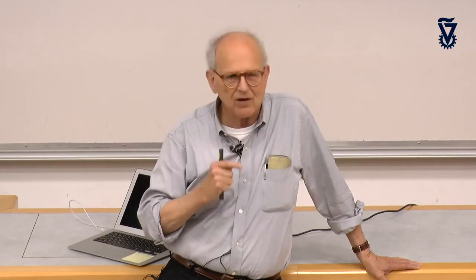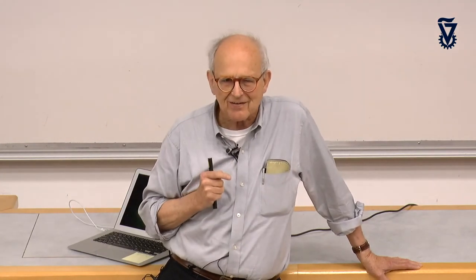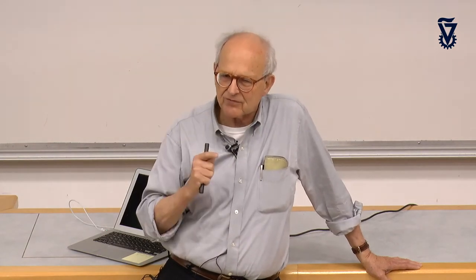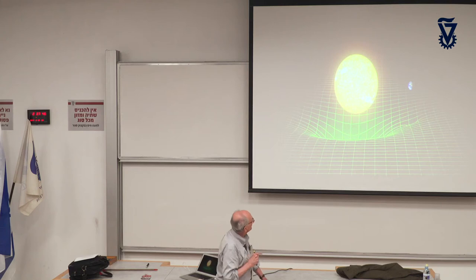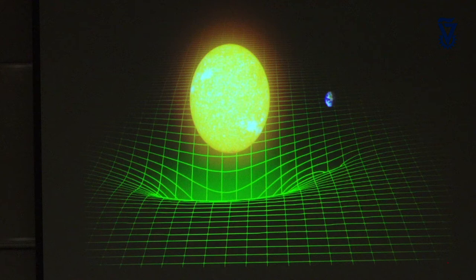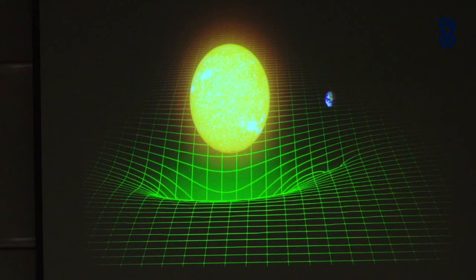I'm not going to give you a deep lesson in general relativity, but I can give you a feel for it. What you're seeing here is — I don't know how many of you know what a jungle gym is — this is a two-dimensional cut through a jungle gym. You've laid it out with effectively rigid rods and labeled space in the x, y, and z directions.